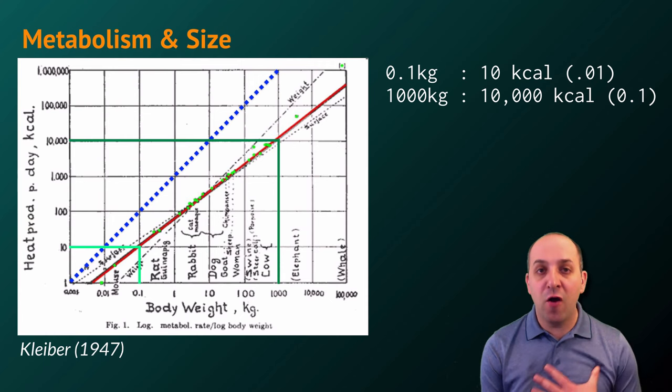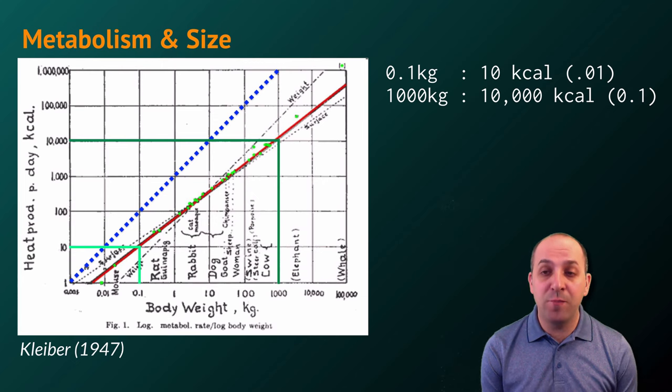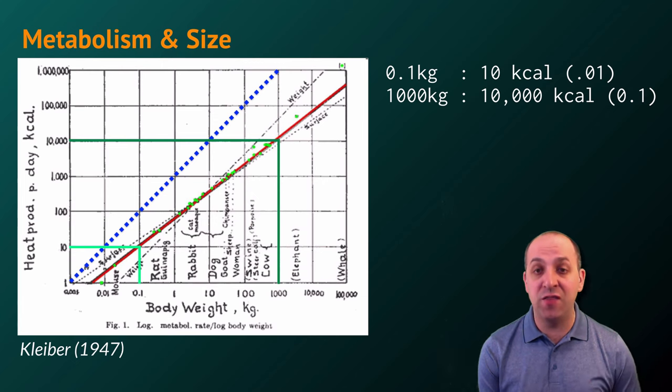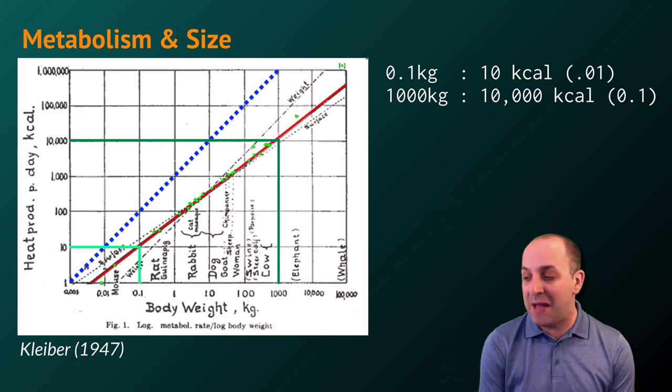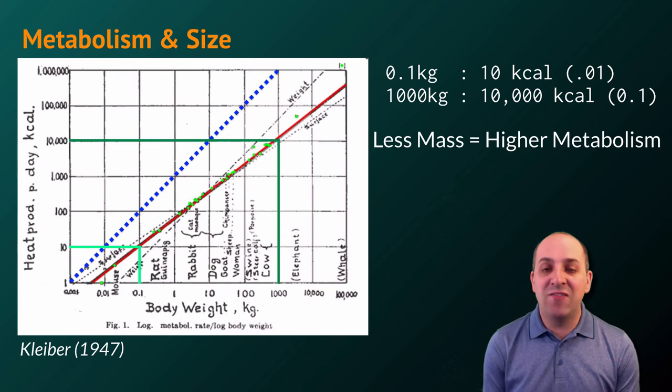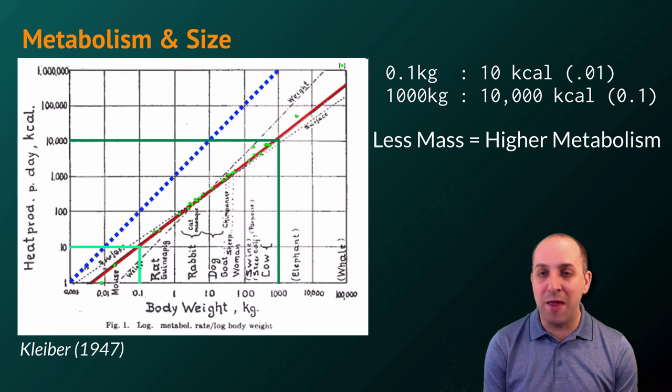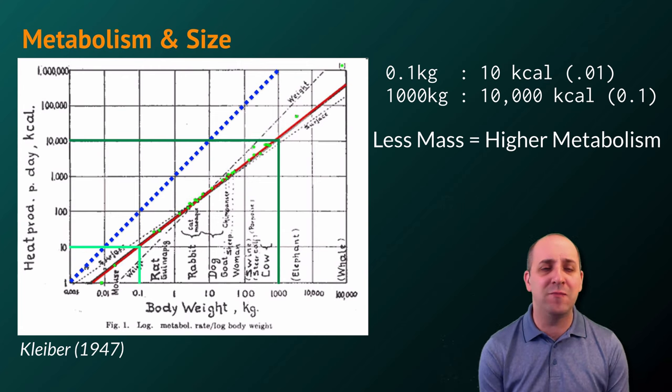Per unit of mass, smaller animals will spend comparatively more energy than larger animals do in order to maintain their life functions. Another way of saying this is that the less mass an animal has, the higher its metabolic rate is. An obvious question for this is why, as it almost seems counterintuitive.